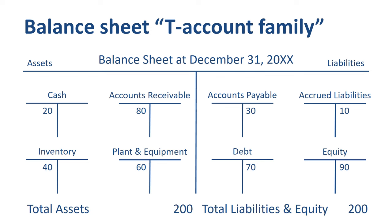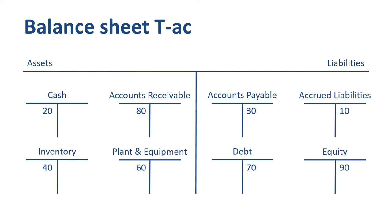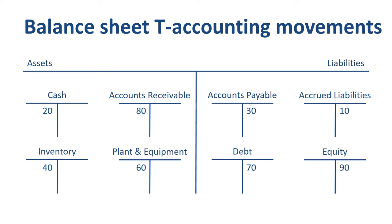We can now start doing our T-accounting for movements on the balance sheet. For illustration purposes, I will walk you through 5 balance sheet to balance sheet transactions. On purpose, I am not involving any transactions that touch the income statement, as that would greatly increase the scope and complexity. Our first transaction is a payment by the customer of the full accounts receivable balance. This is recorded as a debit to cash, and a credit to accounts receivable.